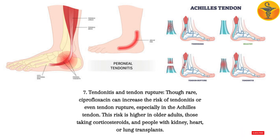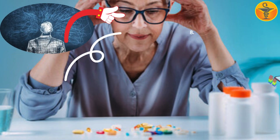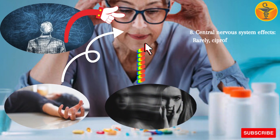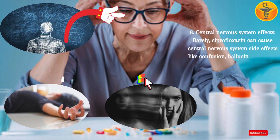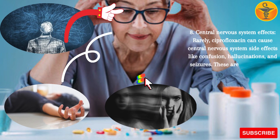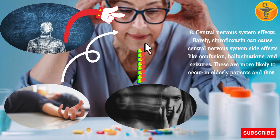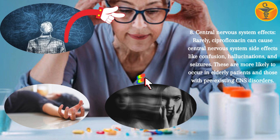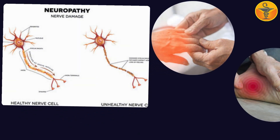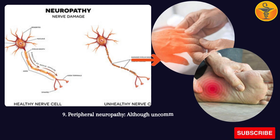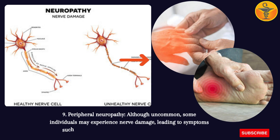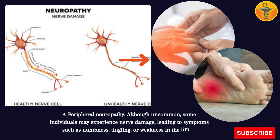8. Central nervous system effects — rarely, ciprofloxacin can cause CNS side effects like confusion, hallucinations, and seizures, more likely in elderly patients and those with pre-existing CNS disorders. 9. Peripheral neuropathy — although uncommon, some individuals may experience nerve damage leading to symptoms such as numbness, tingling, or weakness in the limbs.